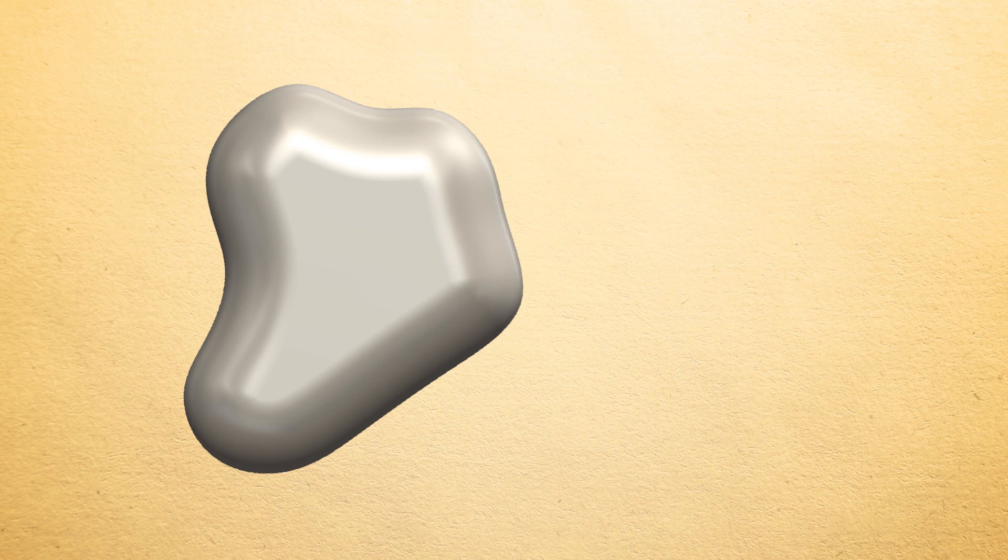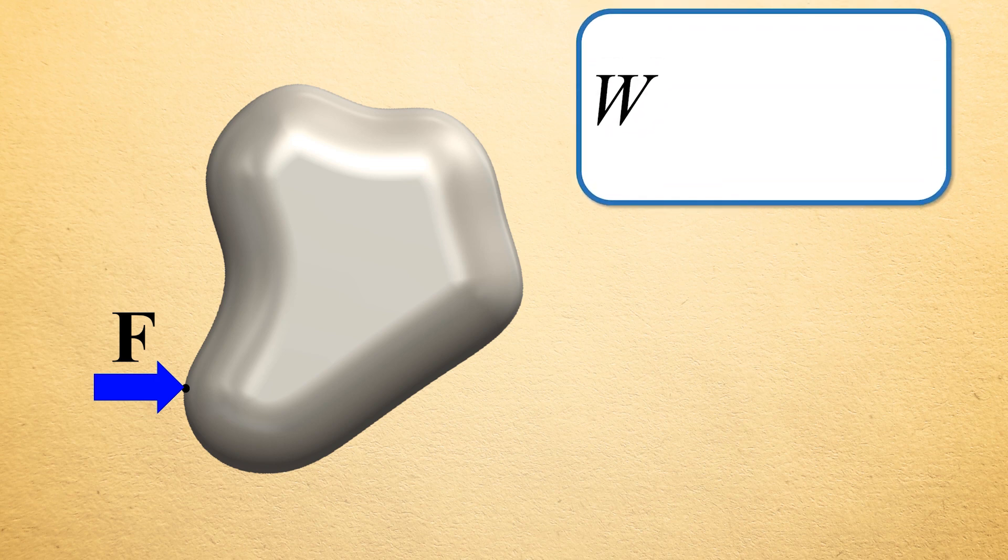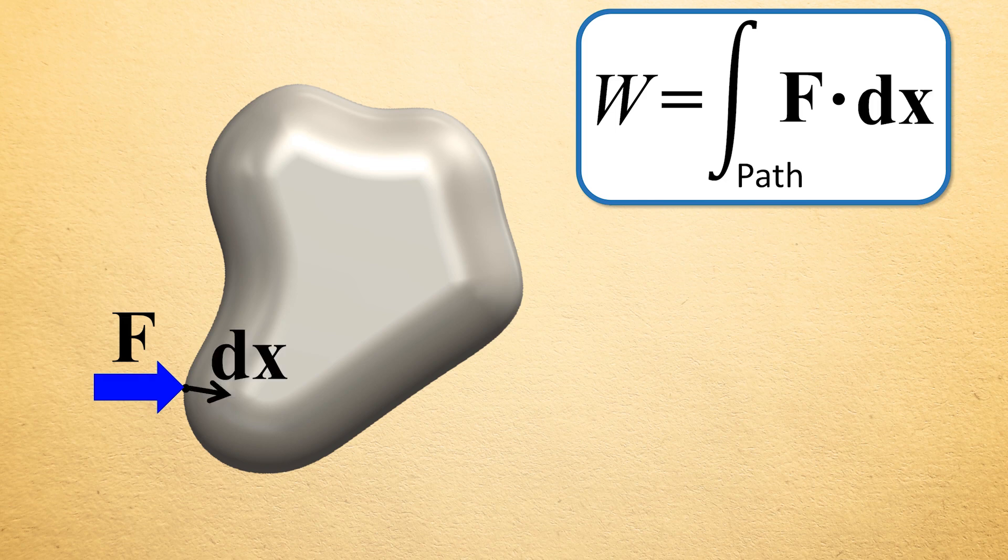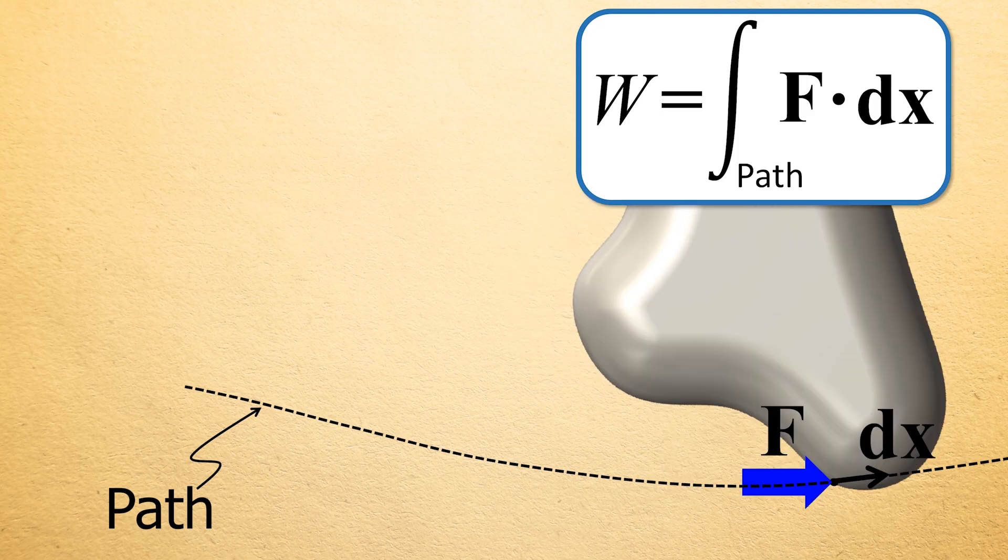According to calculus, the most general definition of work produced by an applied force is a scalar value W that equals the line integral of the dot product of the force vector F applied to a general body and the infinitesimal displacement vector dx that points in the direction of the path along which the body displaces. But this is just a side note for math lovers, so feel free to completely ignore what I just said.